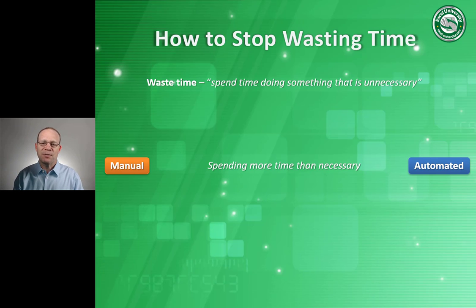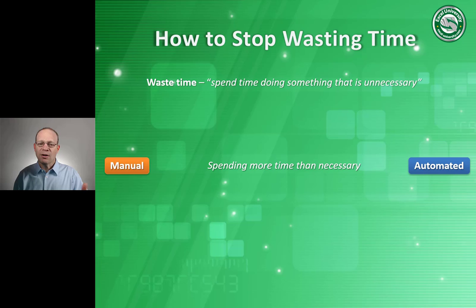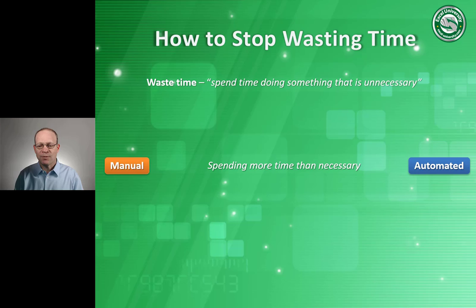We know what wasting time means, but I looked up the definition and it says, spend time doing something that is unnecessary — in other words, spending more time than is necessary to do something. We Excel users fall into this without even realizing it. Because when we all start out, we all start at the same place: manual. We open Excel for the very first time, we see this empty grid, and we start getting in and figuring stuff out. We end up doing a lot of things manually, just because we don't know more efficient options. But our goal is automated.